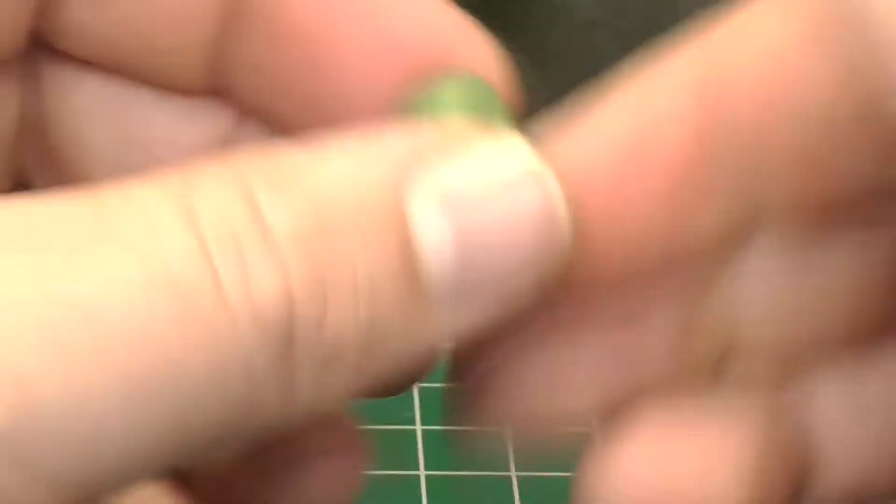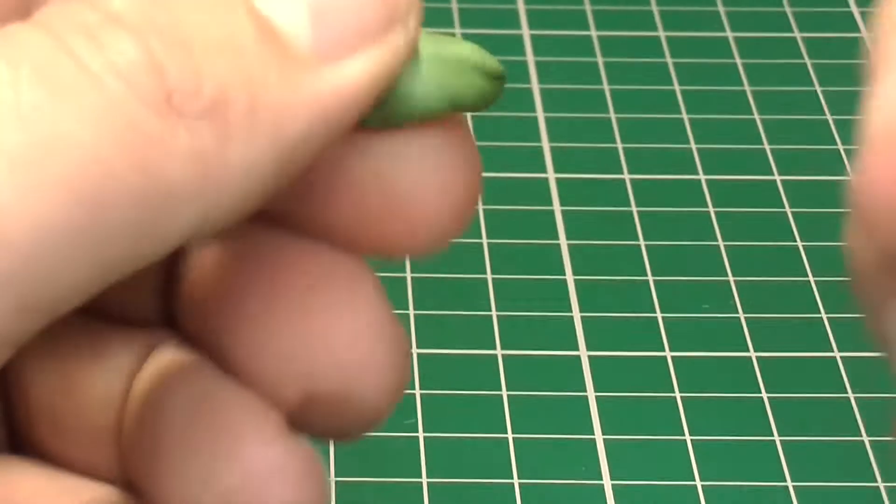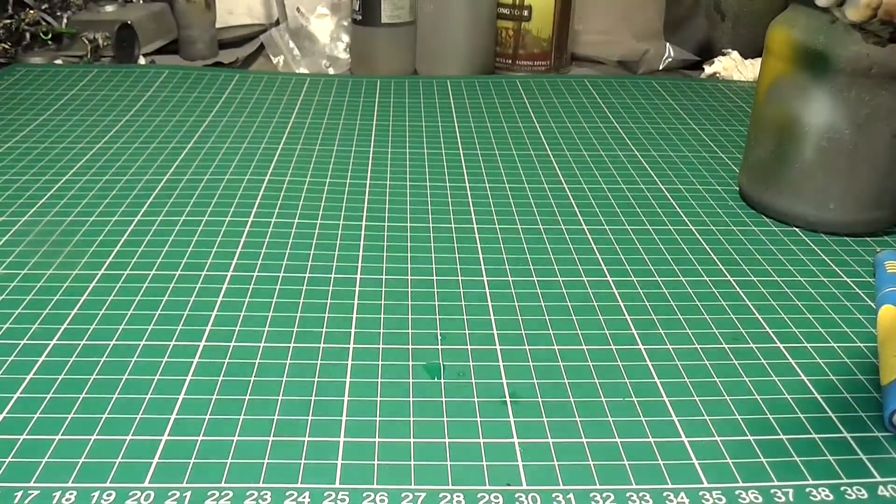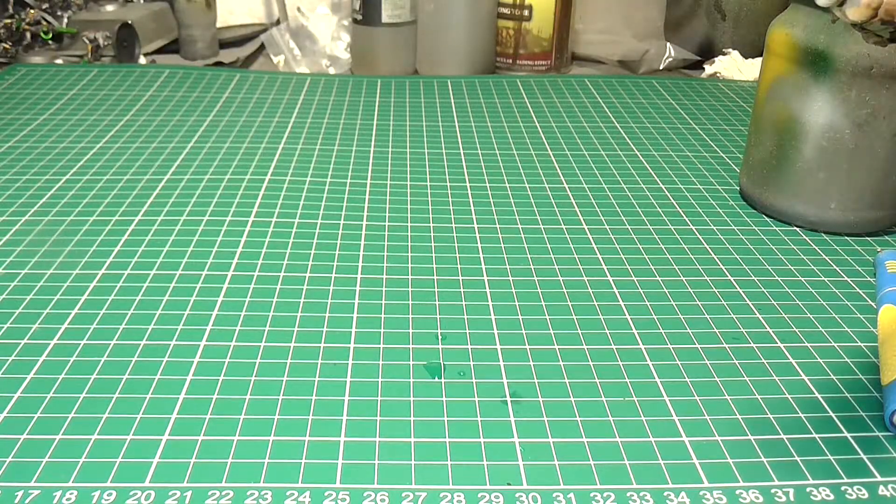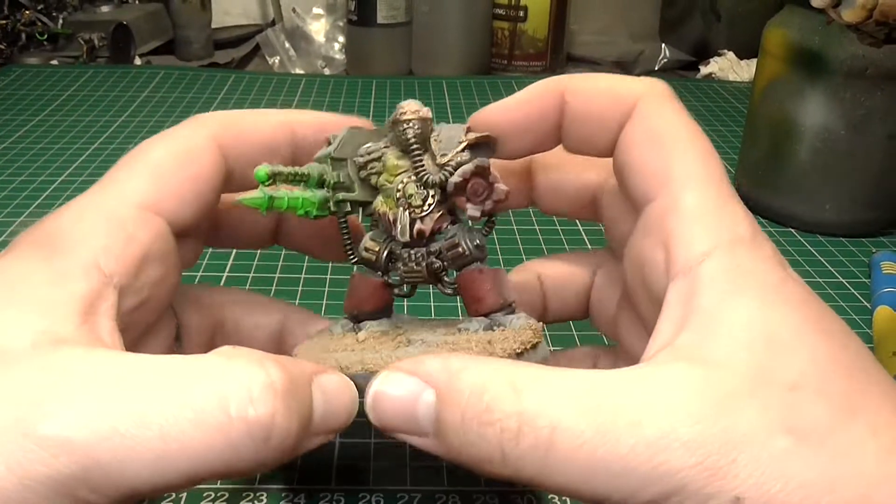And in regards to sculpting things out of green stuff, you can do absolutely all sorts. Some stuff which I will show you in just a second. So, what can you do with green stuff once you've mixed it? Well, aside from gap filling, as I've mentioned...